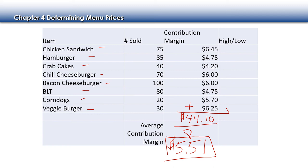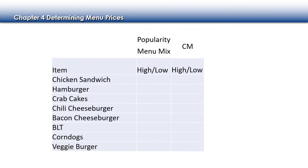We added up all of these, got our total, divided by eight menu items, and got an average contribution margin of $5.51. Now compare everything to that. Is $6.45 higher or lower? Higher. Then $7, $4.75, $4.20, $6, $6, $4.75, $5.70, and $6.25. Now we have both pieces of our puzzle — contribution margin and popularity.